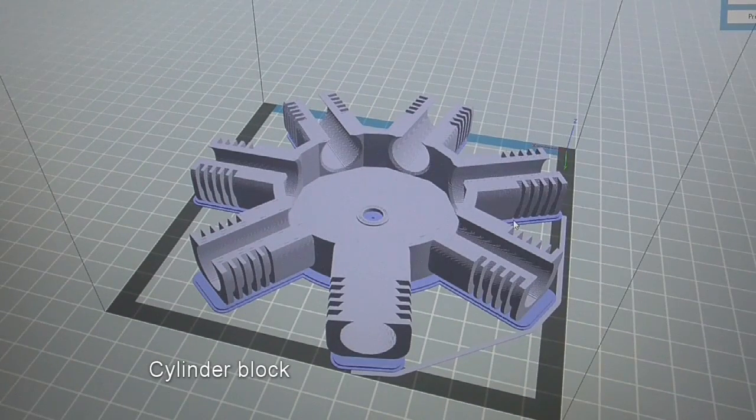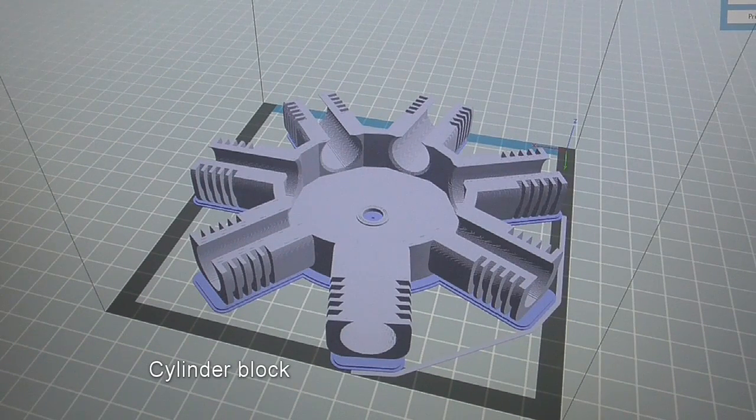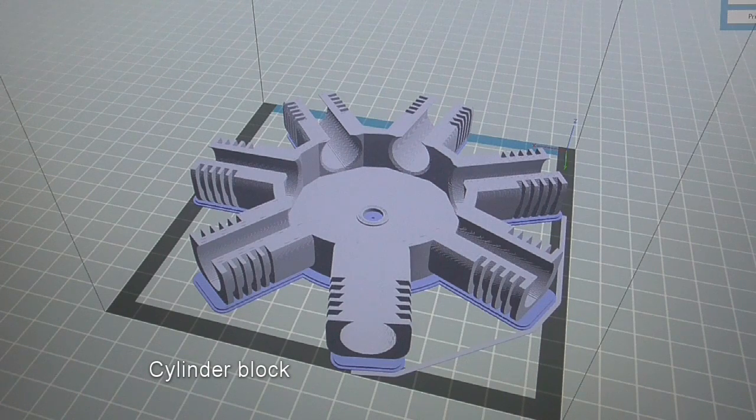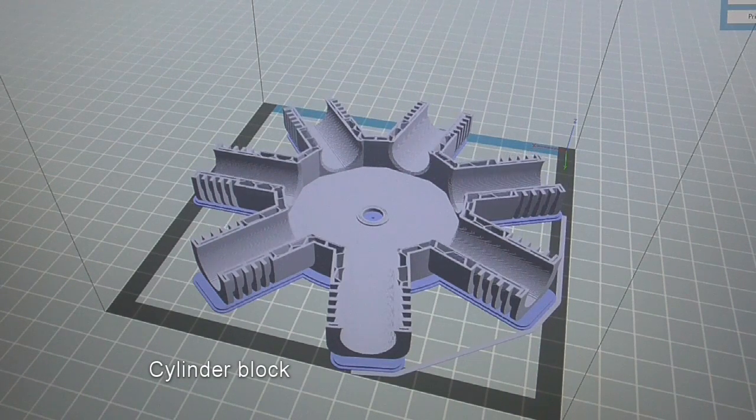First is the cylinder block. This is redesigned to have seven cylinders instead of eight. This print took me about five hours.